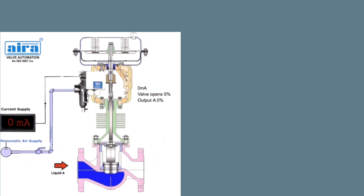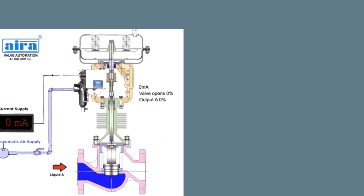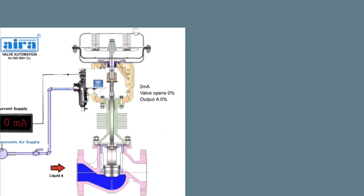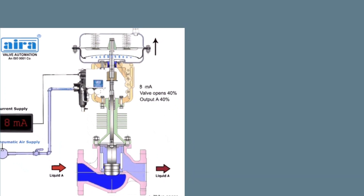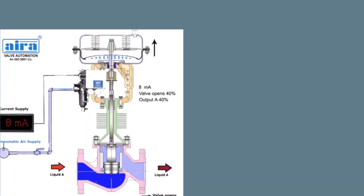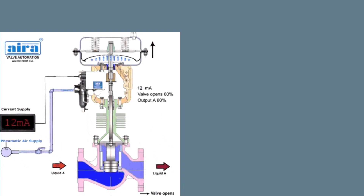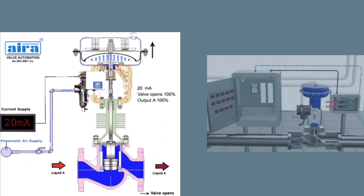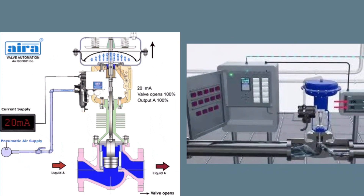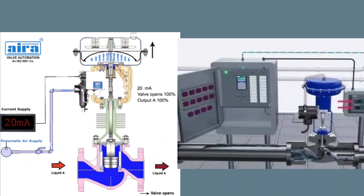The control valve receives a signal from a controller such as a PLC or a DCS in order to operate. The controller compares the actual flow rate to the desired flow value called the setpoint. The controller will then produce an output to move the valve to bring the flow rate to the setpoint value.